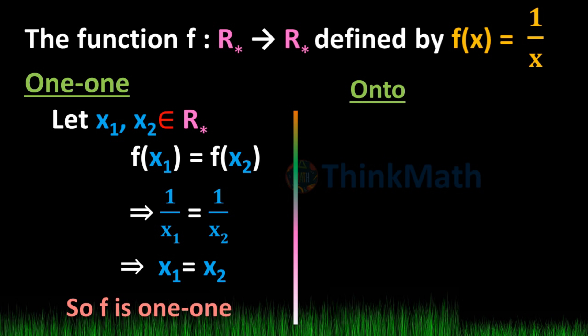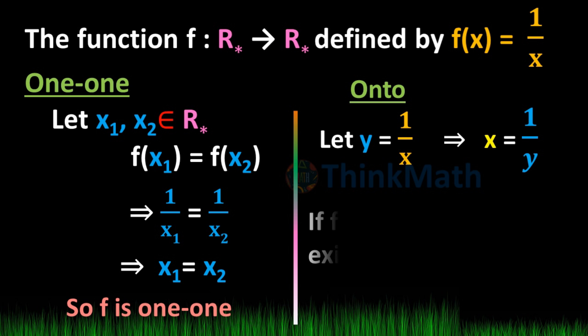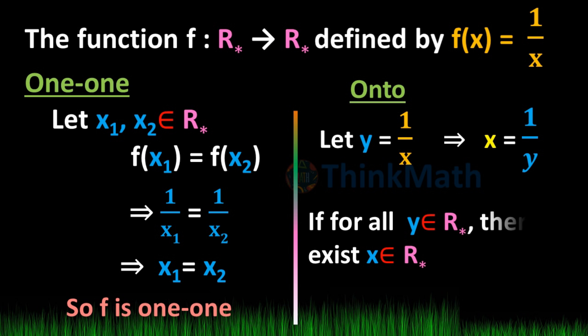Onto proof: Let y equal to 1/x, which implies x equal to 1/y. For all y belonging to R*, there exists x belonging to R*. So f is an onto function. This function is both one-one and onto, so it is a bijective function.